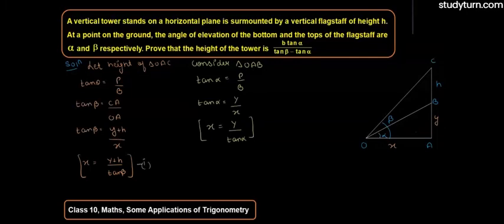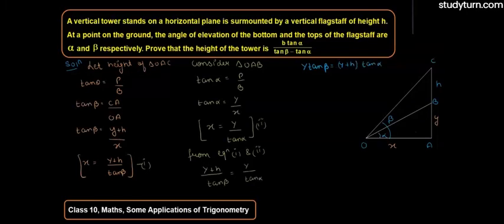Now, equate equation 1 and 2. दोनों equation को equate करेंगे. So from equation 1 and 2, Y plus H upon tan beta is equal to Y upon tan alpha. जब further इसको solve करेंगे, so we get Y tan beta is equal to Y plus H tan alpha. tan alpha को multiply करेंगे. Y tan beta is equal to Y tan alpha plus H tan alpha.